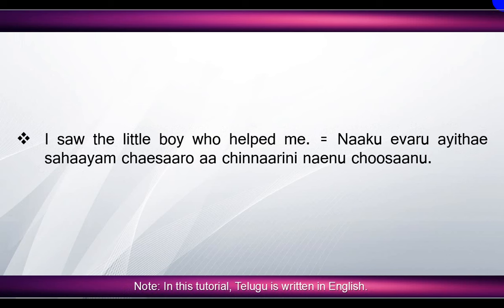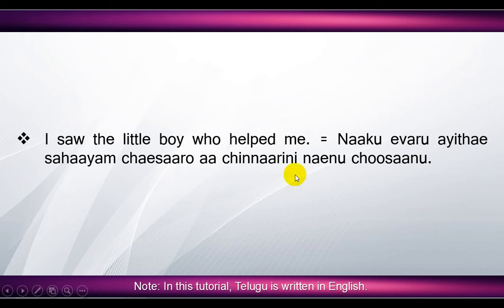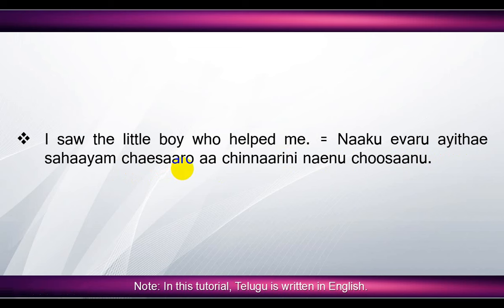'I saw the little boy who helped me' means 'naaku yavarito aite sahayam chesaro, aa chinnaari ni, nenu choosyanu'. Here, 'I saw' means 'nenu choosyanu', 'little boy' means 'chinnaari'. Since it's an object, we added 'ni' suffix. Actually, we add 'nu' suffix to objects, but if the word ends in an 'n' sound — for example 'chinnaari' — we add 'ni' suffix. 'Who helped me' means 'naaku yavarito aite sahayam chesaro'. 'Helped' means 'sahayam chesaro', 'me' means 'naaku'.